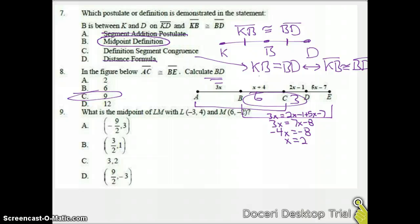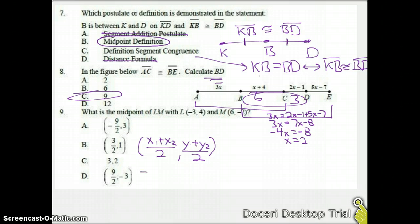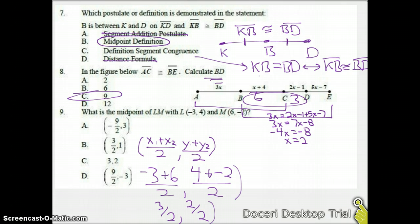Now we go to number 9. We need to find midpoint. We're going to use midpoint formula. We want to find a point as an answer. So that means we're going to add the X values, divide by 2. Add the Y values, divide by 2. And we're doing that because we're finding the average of the two values. So I have negative 3 plus 6 over 2, and then 4 plus negative 2 over 2. That gives me 3 over 2 and 2 over 2. Now 3 over 2 is going to stay at 3 over 2. But 2 over 2 becomes 1. So we get our answer of B.